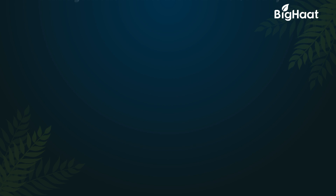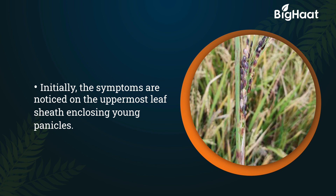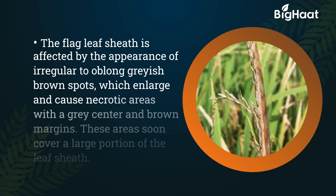Management of sheath rot in rice or paddy. Initially, the symptoms are noticed on the uppermost leaf sheath enclosing young panicles. The flag leaf sheath is affected by the appearance of irregular to oblong grayish-brown spots.